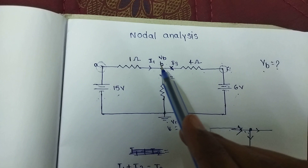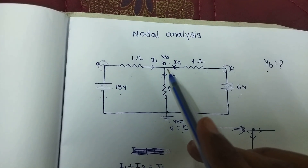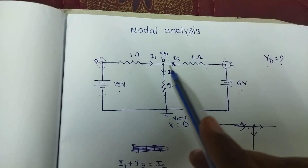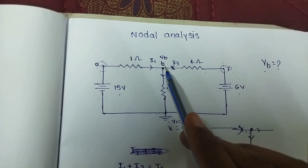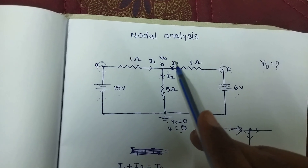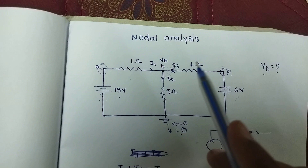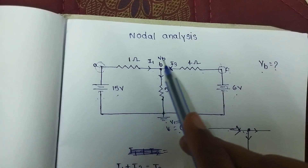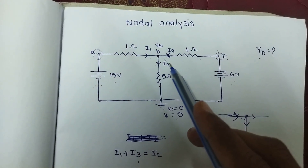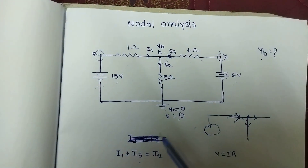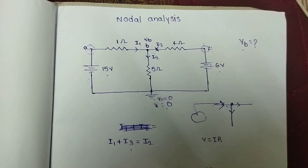If we consider this node — we have only one, a single node — we apply KCL. KCL: incoming current equals outgoing current. The incoming currents are I1 and I3, and the outgoing current is I2. So the equation is: I1 plus I3 equals I2. This is our equation.